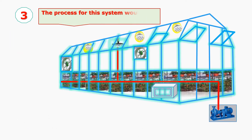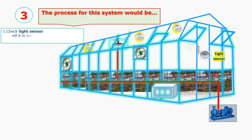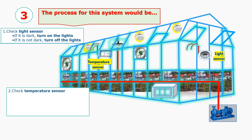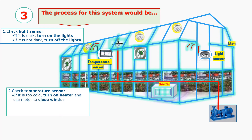The process for this control system would be: first, check the light sensor — if it is dark, turn on the lights; otherwise, if it is not dark, turn off the lights. Second, check the temperature sensor — if it is too cold, turn on the heater and use the motor to close the window.